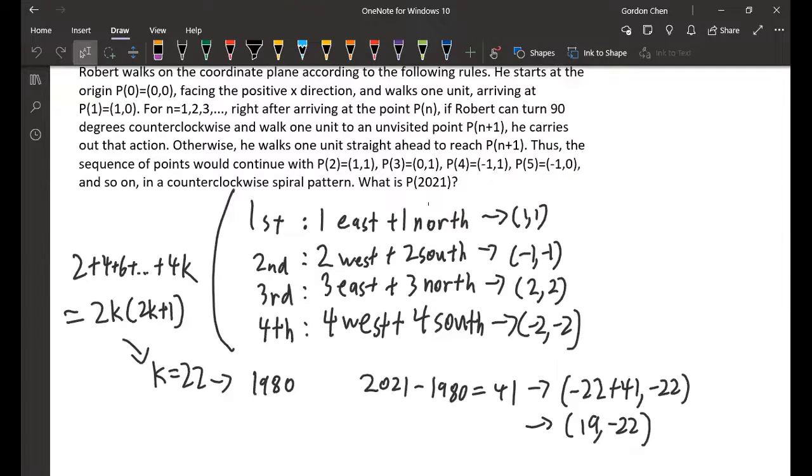He starts at (0,0) and faces the positive x direction, which is east. He walks one unit and goes to P(1). After going to P, he can turn 90 degrees counterclockwise or he can walk one unit to an unvisited point P+1.